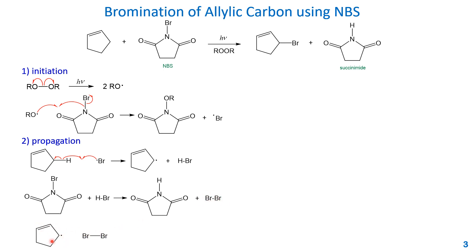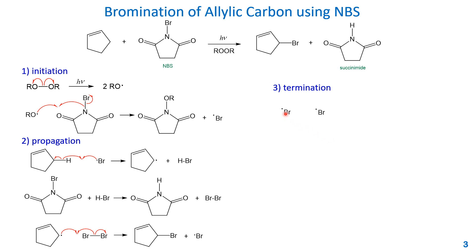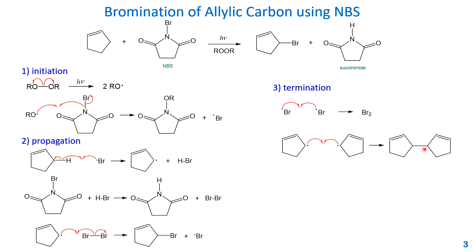The bromine radical goes to the third step and reacts with the allylic radical from the first step. Homolytic cleavage of the bromine–bromine single bond generates two bromine radicals. One bromine radical reacts with the allylic radical to form the major product, allylic bromide, and the other bromine radical goes back to the first propagation step to react with more alkene. This is a sustainable cycle. Termination involves two bromine radicals quenching each other to form Br₂, or two allylic radicals combining to form a neutral isolated diene, or an allylic radical reacting with a bromine radical to form a little more allylic bromide.